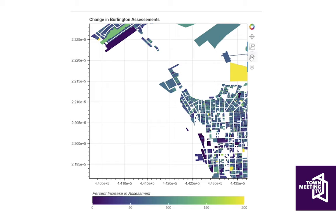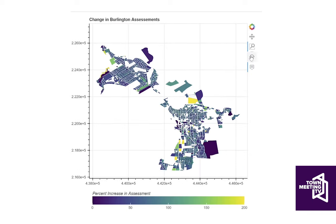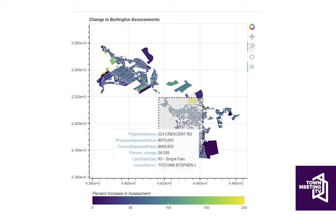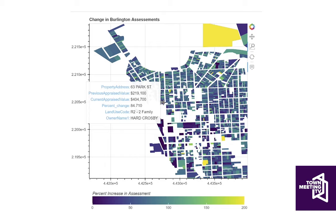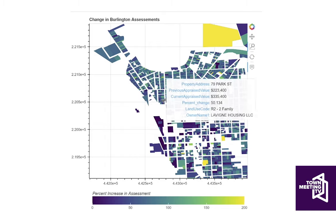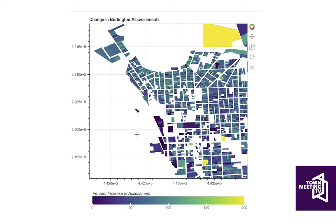One of the big concerns that motivated this map was the question of whether assessments were rising more in the Old North End than in other parts of town. A lot of people feel like the Old North End is a bit of a gentrification front — that housing prices might be increasing faster and people feel squeezed and like they might be pushed out. But looking at the map, there are a few properties that increased a lot in value, but it doesn't seem to be a huge color trend across the city.